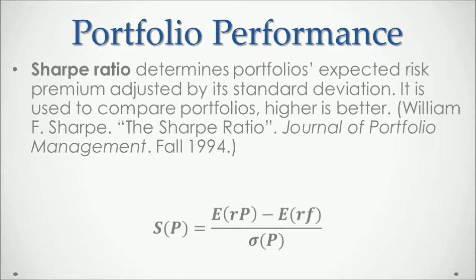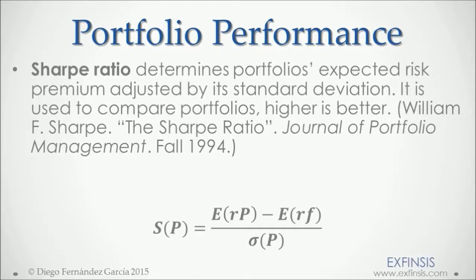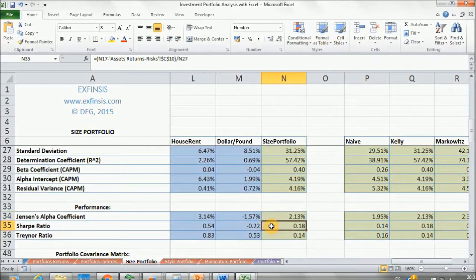As a formula, the Sharpe Ratio of the portfolio — denoted by the letter P — is equal to the portfolio's arithmetic mean minus the arithmetic mean of the risk-free rate of return. For this exercise, we're using the one-year Treasury bill. That result is divided by the standard deviation of the portfolio, denoted by the letter sigma from the Greek alphabet. This is a very important performance metric that we'll use in Portfolio Optimization.